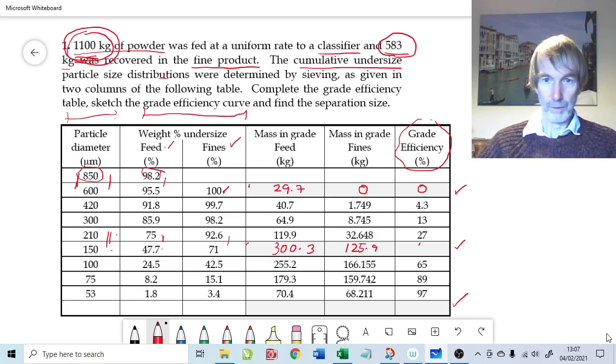All the other values in this table have been calculated the same way by taking the difference between the percentages of the feed values and the percentages of the fine values, and using the differences multiplied either by 1100 for the feed material or 583 for the fines material.